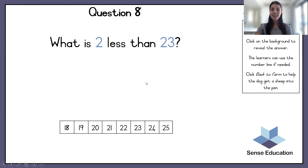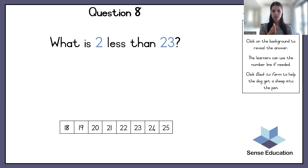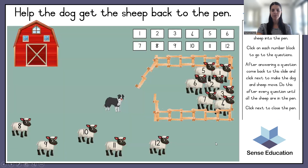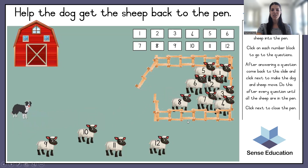What is two less than twenty-three? You are going to make two hops backwards. Go to number twenty-three and jump one, two. The answer is twenty-one. If you are at twenty-three, you go one, two and land on number twenty-one. The sheepdog is doing such a good job!